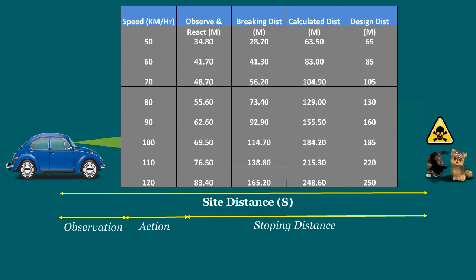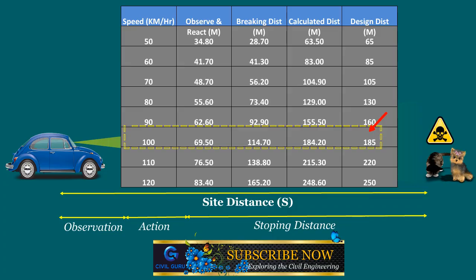Let us take a sample on this table. When a vehicle is traveling in 100 km per hour speed and an object is found on the road, then the vehicle needs minimum of 185 meters to stop the vehicle without any hazard.